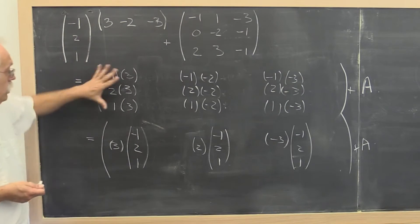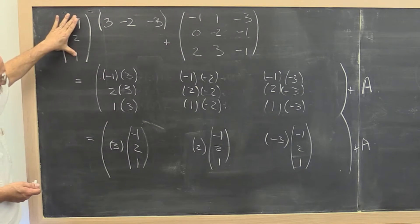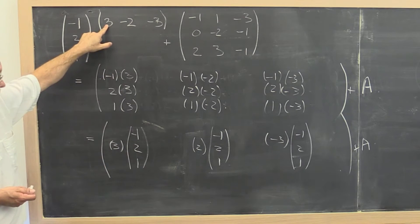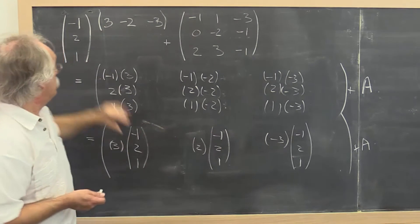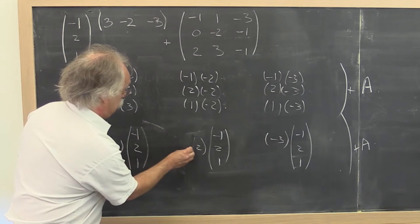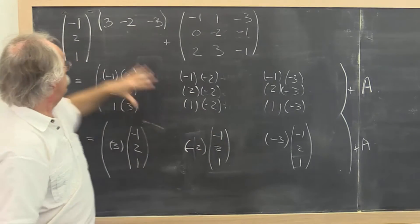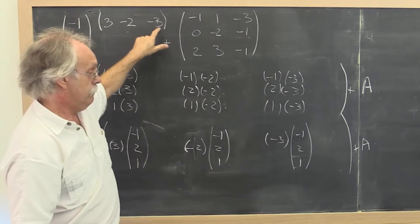So notice that what we just said can be summarized as the first column is just this vector times 3. The second column is just this vector times negative 2. And the last column is just this times minus 3.